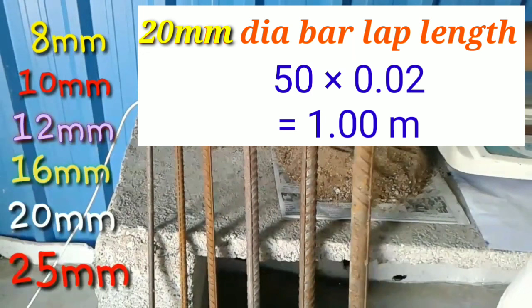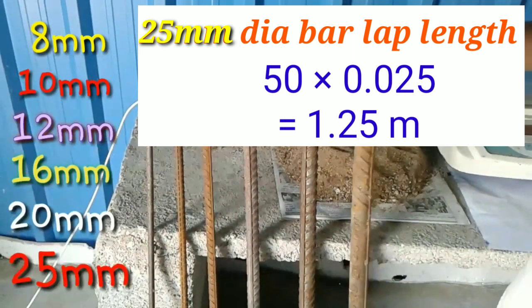For 25mm dia bar, lap length: 50 × 0.025 = 1.25 meter. Thanks for watching.